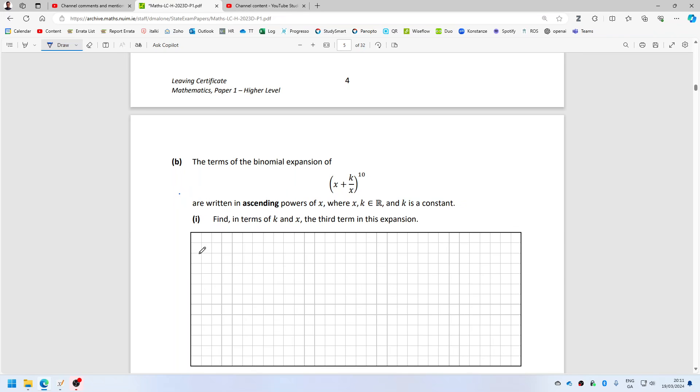Okay, the terms of binomial expansion of that are written in ascending powers of x, where f, k, are real constants. Find terms x and k, the third term in the expansion.